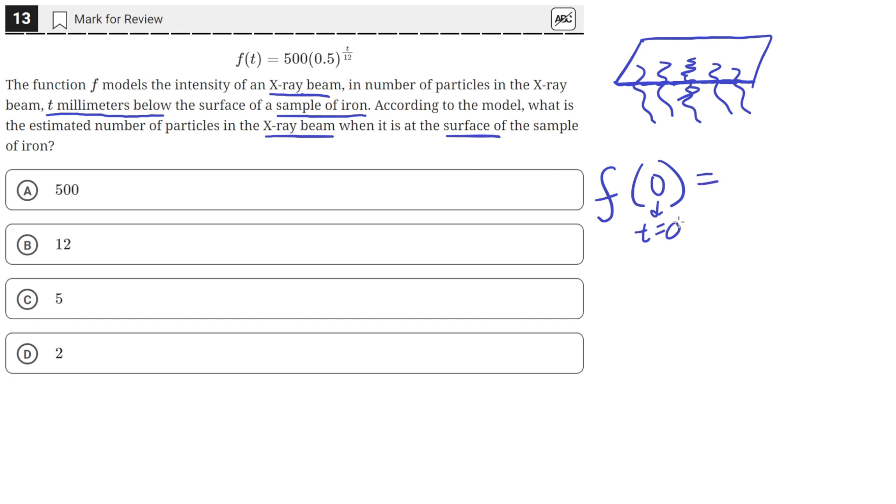So we just need to plug in 0 for the value of t. So the equation becomes 500 times 0.5 raised to 0, since there's a t here, divided by 12.